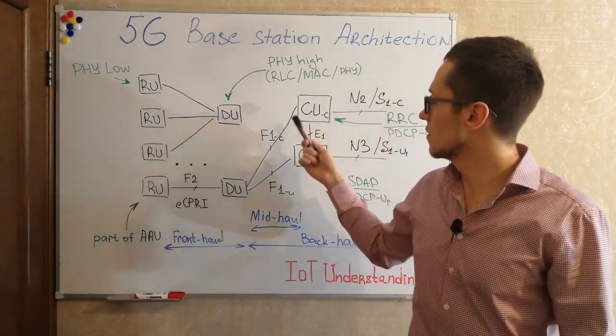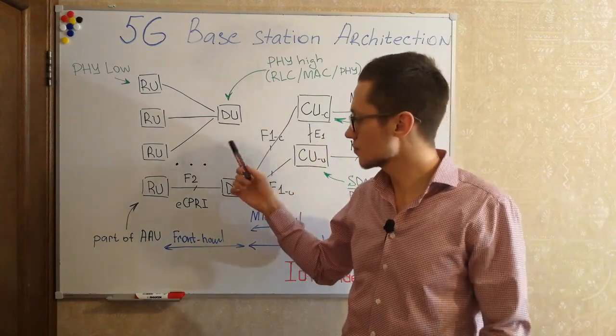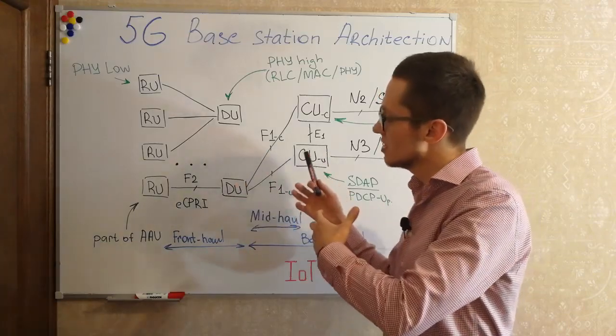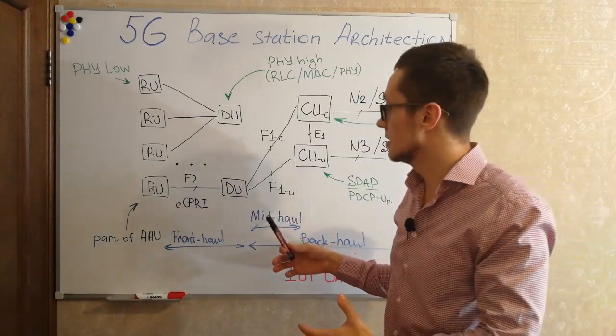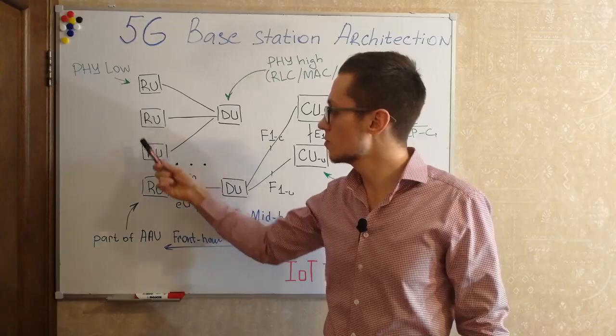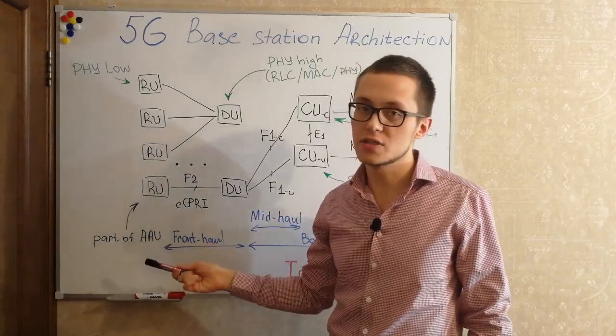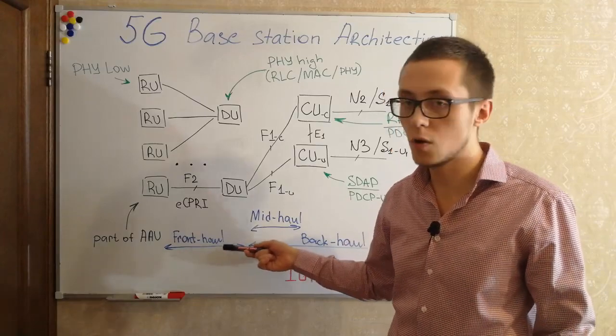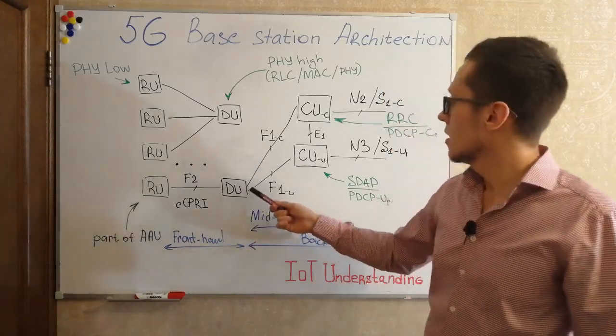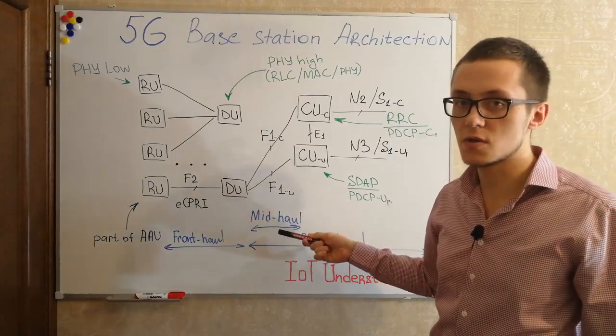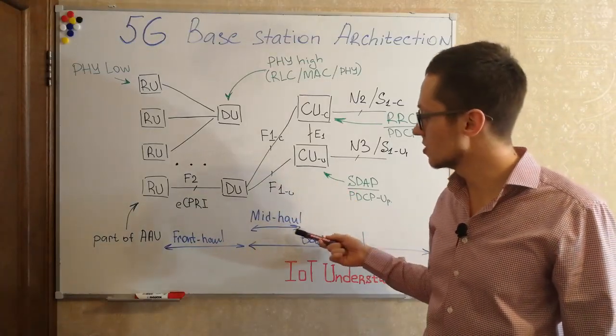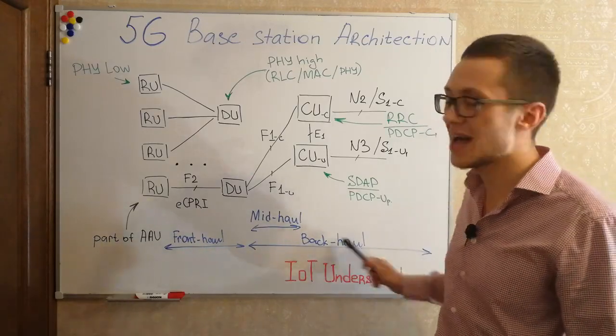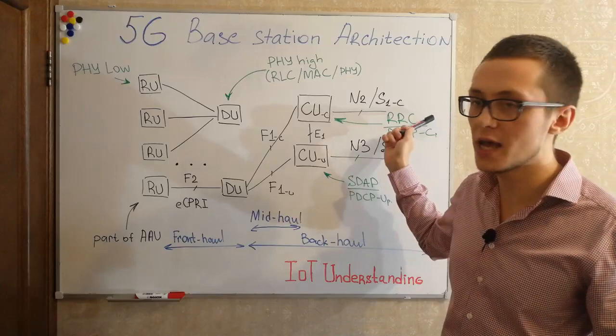So distributed unit is a kind of trade-off between capacity and latency, so you can deploy it as you wish. And radio units may be as a part of active antenna unit as I said before. So this part of base station we call it fronthaul as it used to be before. Actually this part, some sources sometimes you can hear such terms as midhaul, but in a common sense, in common use, all of this we call backhaul from distributed unit to core network.